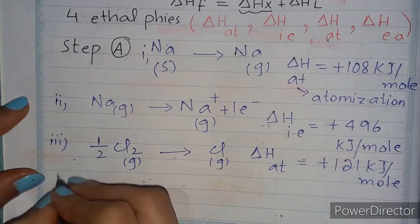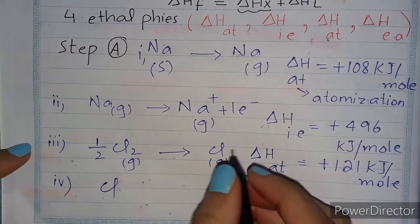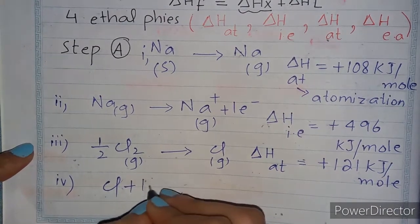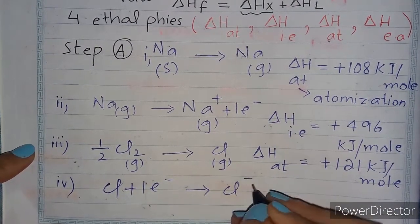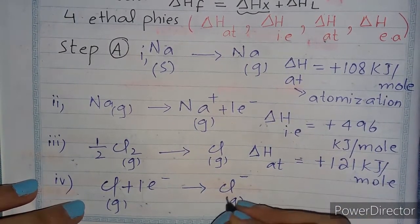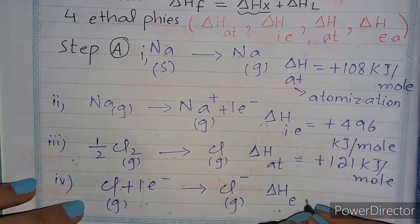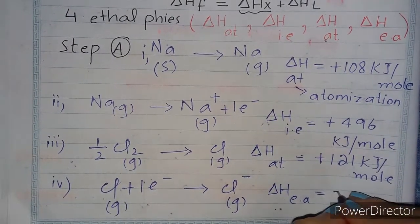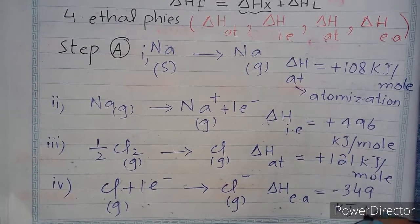Fourth step: converting the chlorine atom into a single gaseous ion by gaining one electron. Cl(g) + e⁻ → Cl⁻(g). The enthalpy of electron affinity is involved, with a value of minus 349 kJ/mol (exothermic).